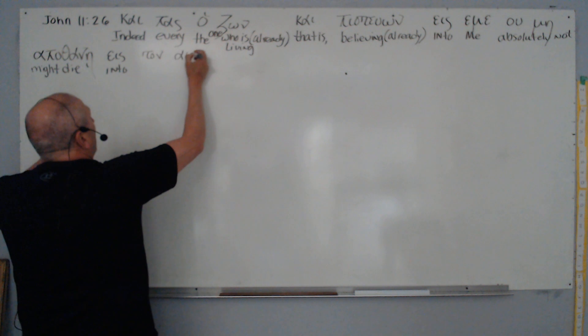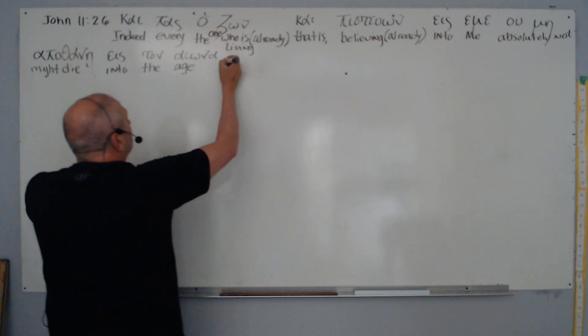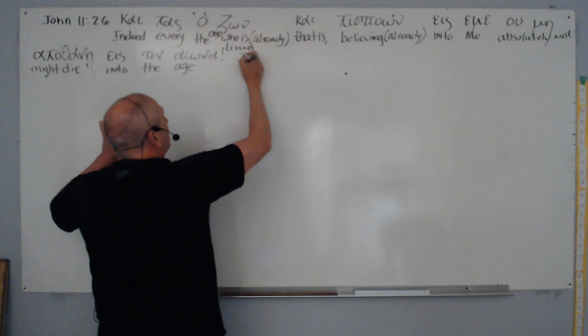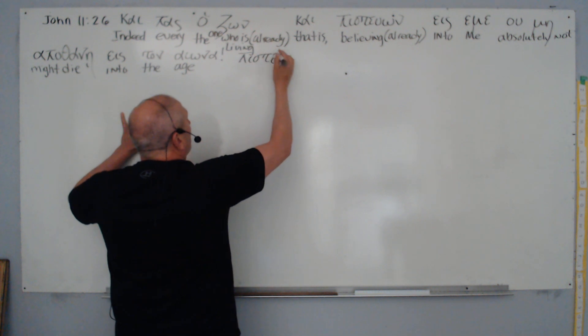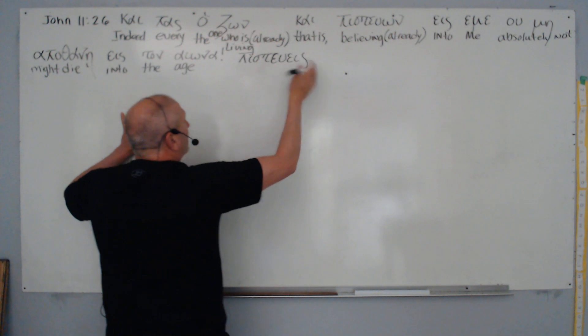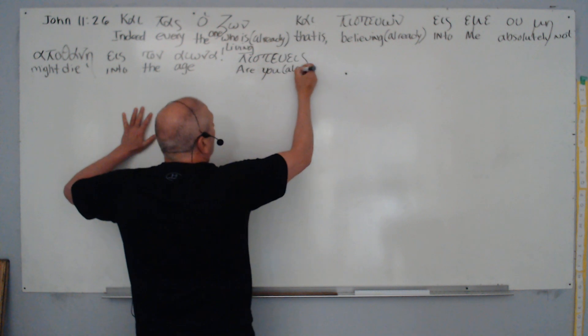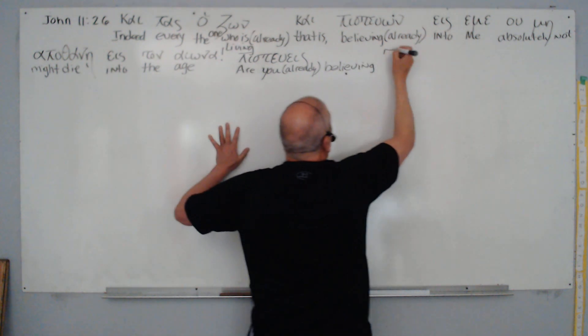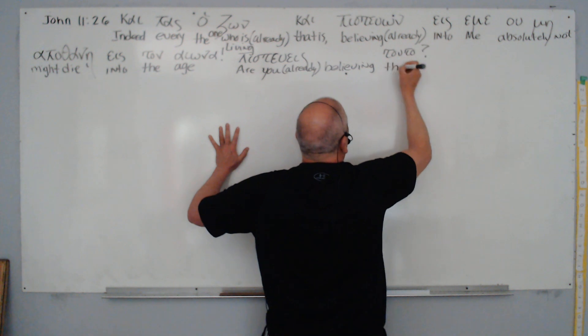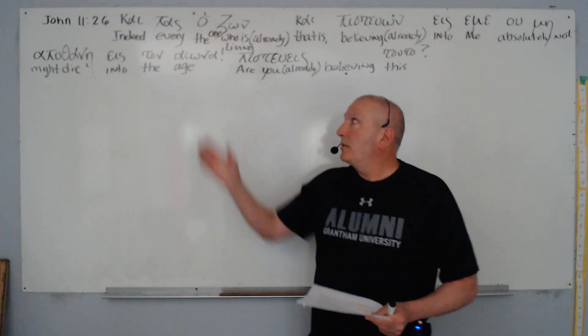Then he went on very emphatically and stated 'into ton iona,' into the age. Let's put an exclamation point. Then he asked the question: 'pistuo'—are you already believing this? What really makes it unassailable is he's speaking presently. This is a present active participle, both of these—that's a forever aspect, not a forever action.